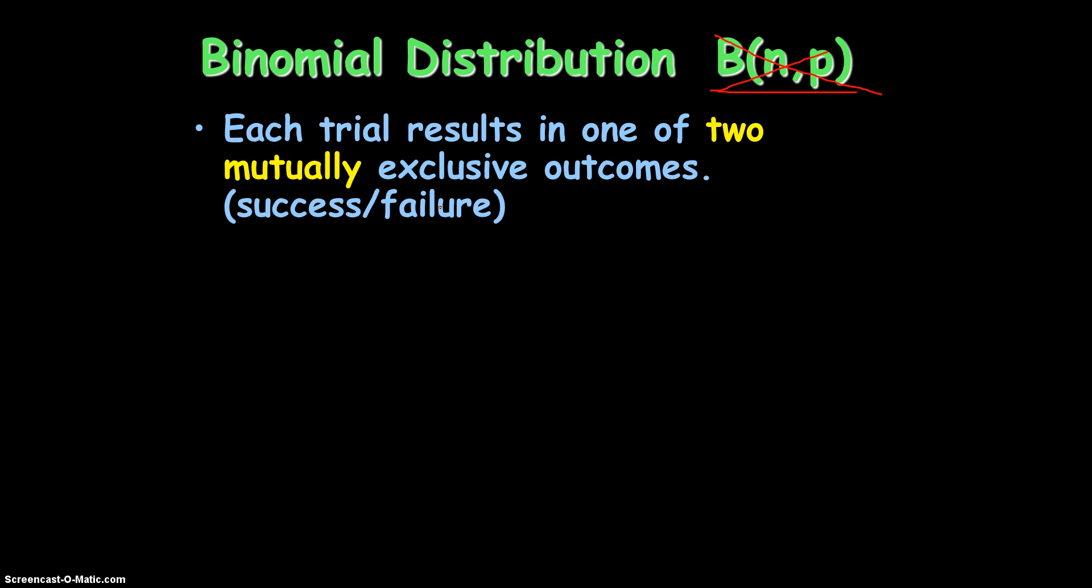So it's either going to be success or a failure. And whenever you read a problem and you think it's not going to be a probability, it's not going to be any sort of description, it's going to be a yes or a no, a right or a wrong, a success or a failure, that's when you say this problem is a binomial distribution problem.